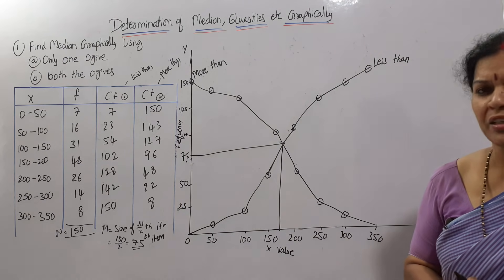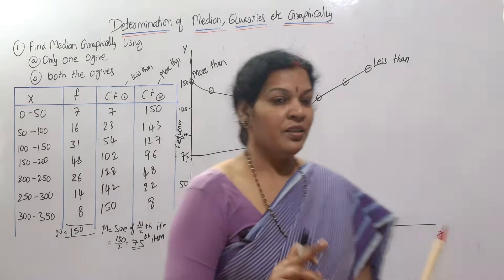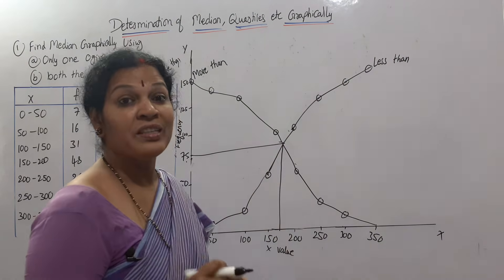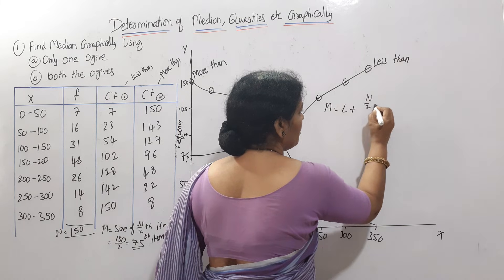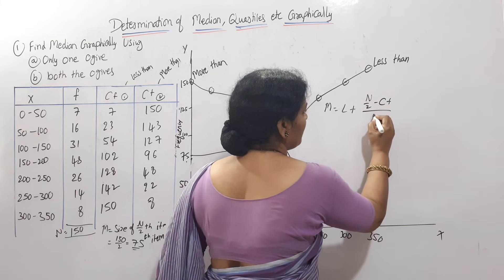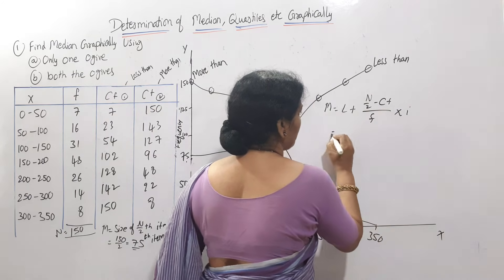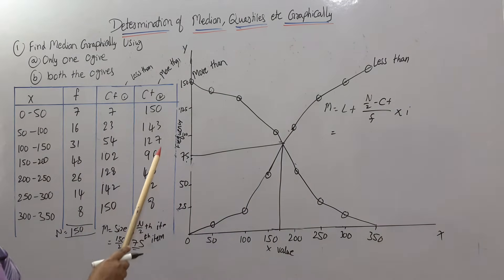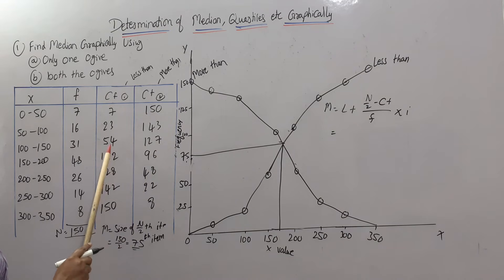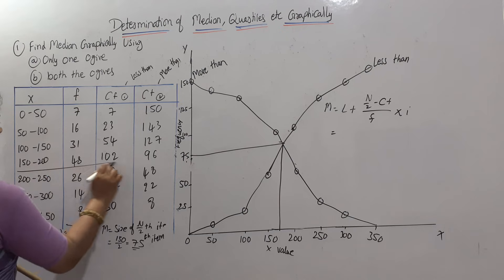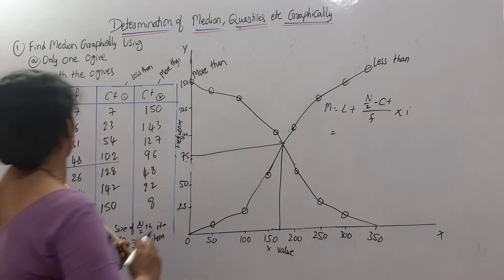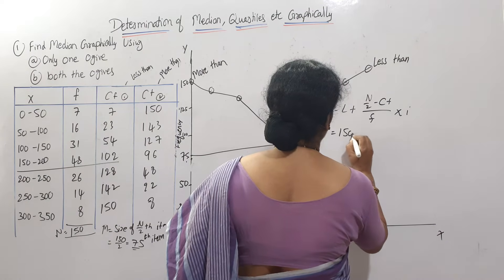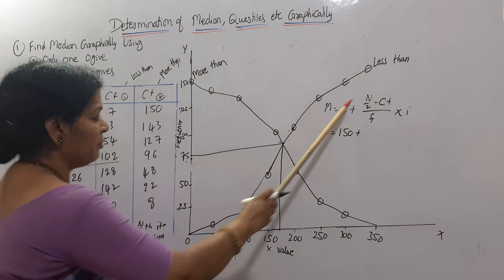We can also verify by the formula: Median = L + [(n/2 − CF) / f] × i. The 75th item lies in the class 150–200, so L = 150, n/2 = 75, CF (previous cumulative frequency) = 54, frequency f = 48, and class interval i = 50.